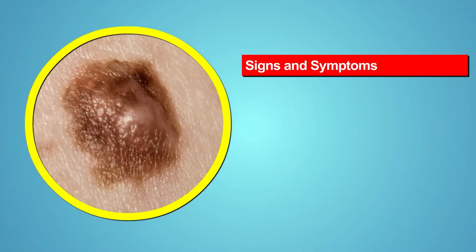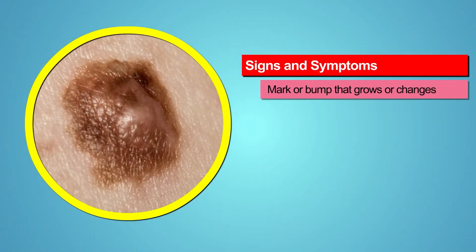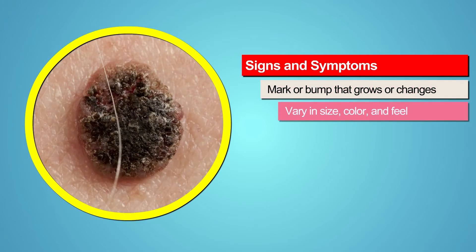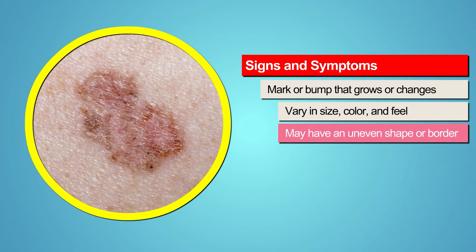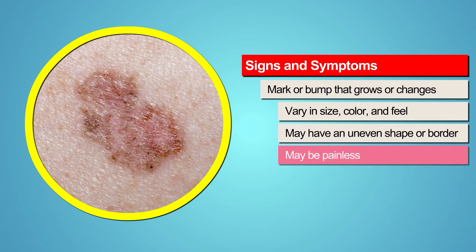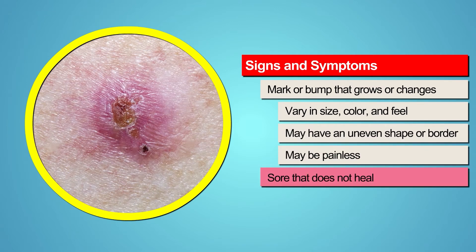Most skin cancers begin with a mark on the skin that grows or changes. It can vary in color, size, shape, and feel. Some, but not all marks, have an uneven shape or border. Others are more like bumps. They are often painless. Some are more like sores that bleed or do not heal.